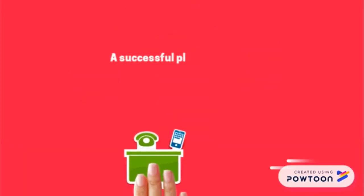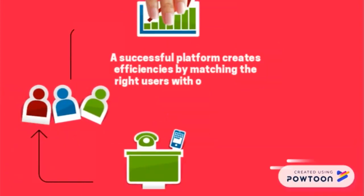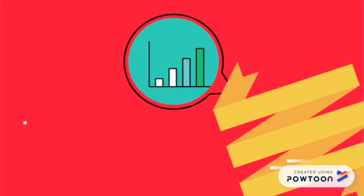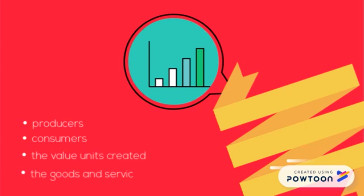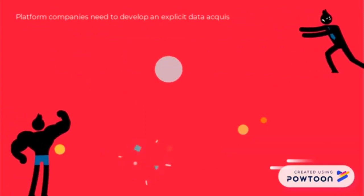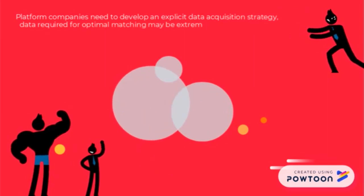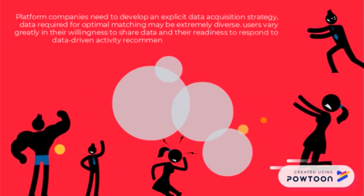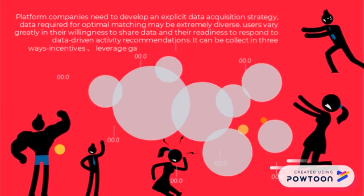Match: a successful platform creates efficiencies by matching the right users with one another and ensuring that the most relevant goods and services are exchanged. A successful platform creates rewarding matches on a consistent basis using data about producers, consumers, the value units created, and the goods and services to be exchanged. Platform companies need to develop an explicit data acquisition strategy. Data required for optimal matching may be extremely diverse, and users vary greatly in their willingness to share data. It can be collected in three ways: incentives, leveraging game elements, and third-party providers.